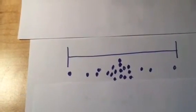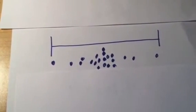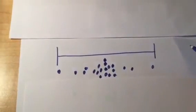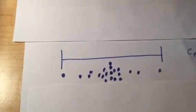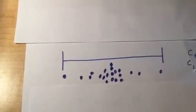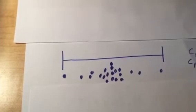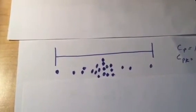So we're kind of assuming a picture that looks like that. And if that's the case, then we said before that the process capability index would be equal to 1, and the other process capability index, C sub PK, would also be equal to 1.